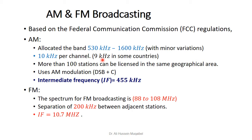How many channels can we fit within the AM radio band? Subtracting the maximum from the minimum gives more than 1 MHz of total bandwidth. Dividing by 10 kHz per channel gives more than 100 stations. The modulation technique used is double-sideband suppressed carrier, and the allocated intermediate frequency for AM is 455 kHz.